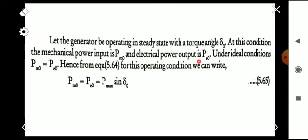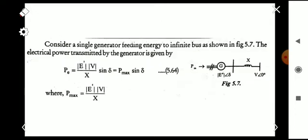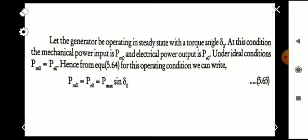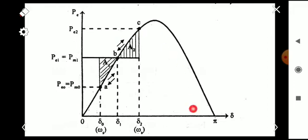The electrical power output is Pe0. Under ideal conditions, neglecting losses, mechanical power input Pm0 equals Pe0. From the power angle equation, Pm0 = Pe0 = Pmax × sin(δ₀). This is the power angle curve of the generator, with torque angle δ on the x-axis and electrical power output Pe on the y-axis.